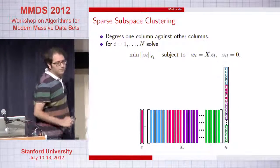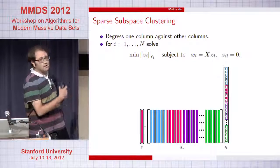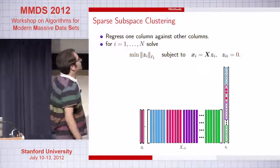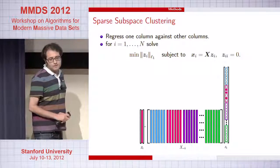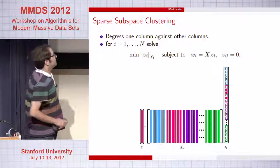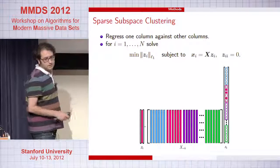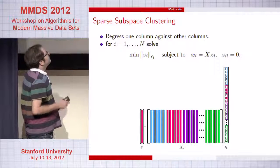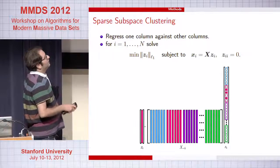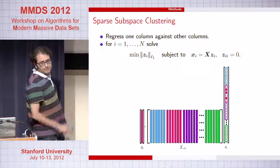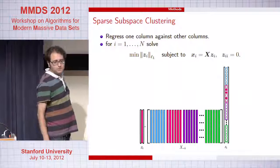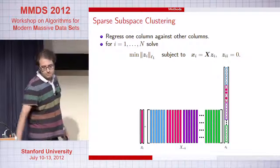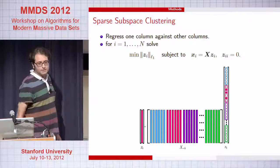Let me go over the method I'm going to analyze. The basic idea is that we try to write each data point in a self-expressive dictionary — that is, we write each data point as a linear combination of all other data points. We regress each column against all other columns and impose an L1 penalty. The hope is that the non-zero coefficients will correspond to points in the same subspace as the original point.